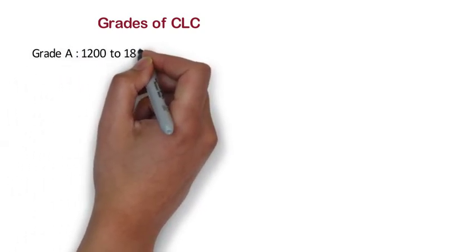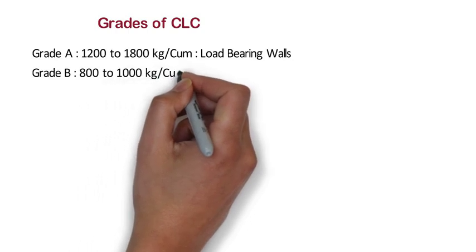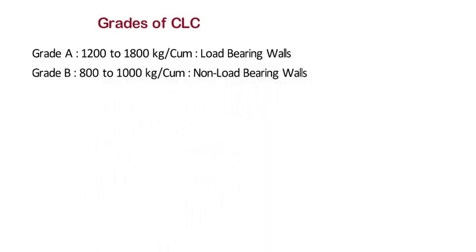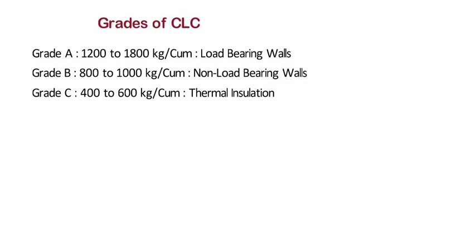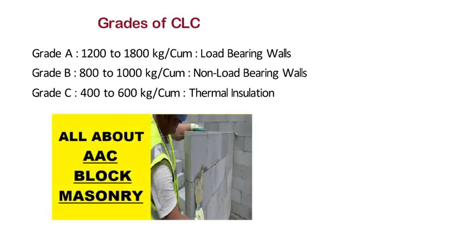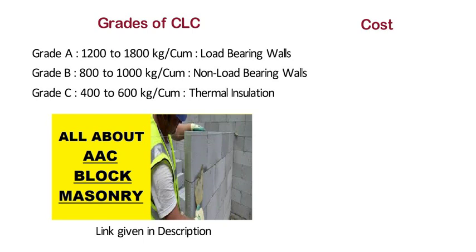Grades of CLC: CLC blocks are available in 3 grades. Grade A: 1200 to 1800 kg per m3 — used in load bearing walls. Grade B: 800 to 1000 kg per m3 — used in non-load bearing walls. Grade C: 400 to 600 kg per m3 density — used for providing thermal insulation. The cost of CLC is less than equivalent volume of conventional concrete. The rate of CLC blocks starts from 1800 rupees per m3, depending upon location and prices of raw materials.